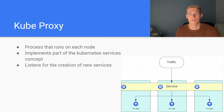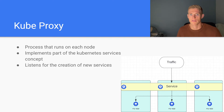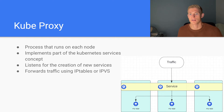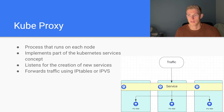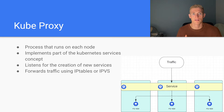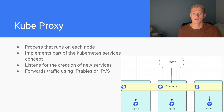KubeProxy listens for the creation of new services — the API server will instruct it when a new service is deployed — and it forwards traffic using IP tables or IPVS. So when a new service is deployed to our cluster, we will update our IP tables or IPVS so that we now have the routing information and load balancing information for that particular service, so that when traffic comes into the service it will send the traffic to the backend pods associated with the service.